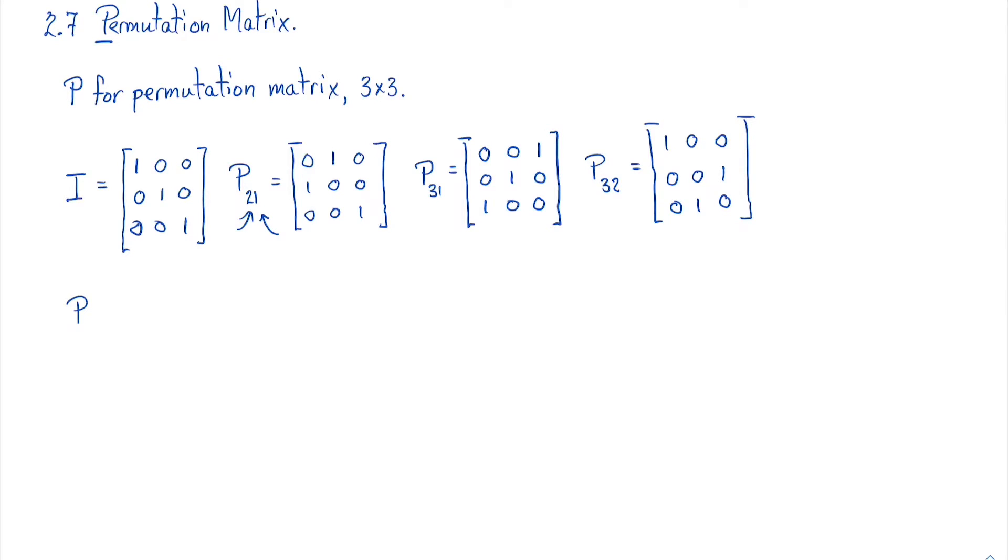Now there's actually 6 of these. We found 4. The last 2 aren't quite so obvious. Let's try this. Let's take P_32, and let's multiply that by P_21. So we can look at what we have. Let's write that out. So that's going to be P_32 is 1, 0, 0, 0, 0, 1, 0, 1, 0. And we're going to multiply that by P_21, which was 0, 1, 0, 1, 0, 0, 0, 0, 1.